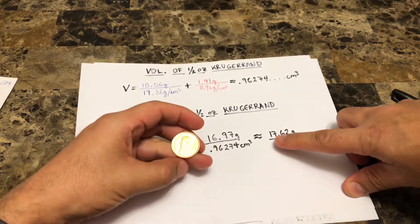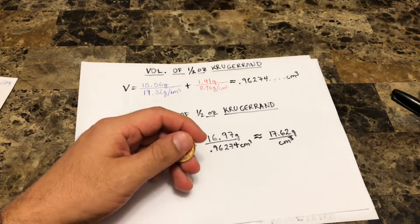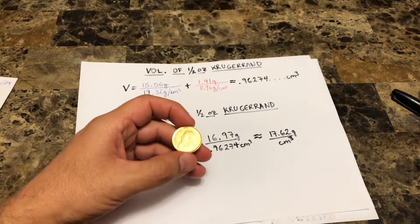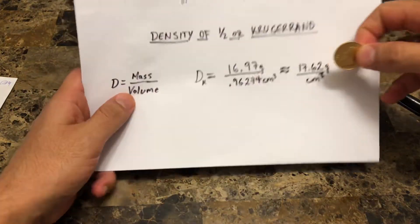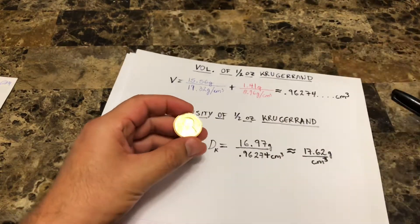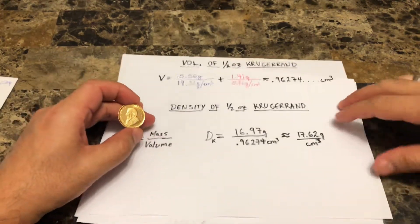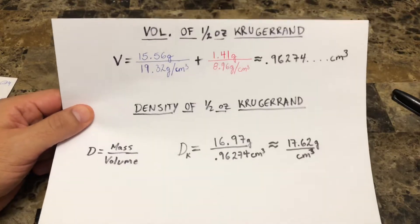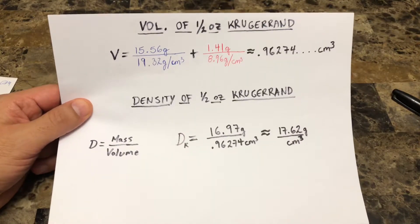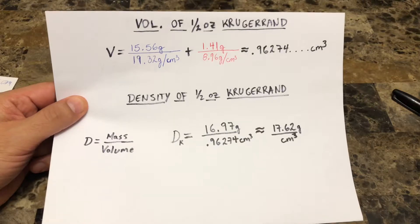So this value — about 17.62 grams per cubic centimeter — is what our Krugerrand should measure. Now why does this matter? The more we know about our coins, the better we can figure out whether they're real or not — whether they're actually made up of the metals they're supposed to be. If we can find out all this information, we can use it as a reference when buying future coins.